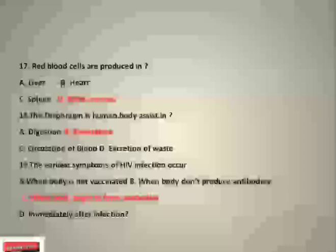Red blood cells are produced in the bone marrow. The diaphragm is the structure in the human body that assists in respiration.